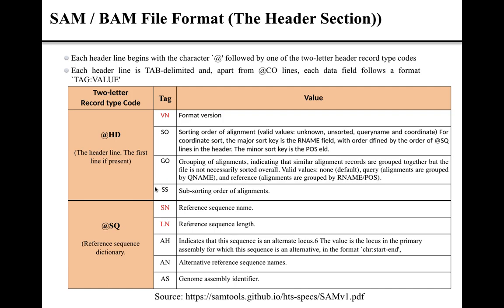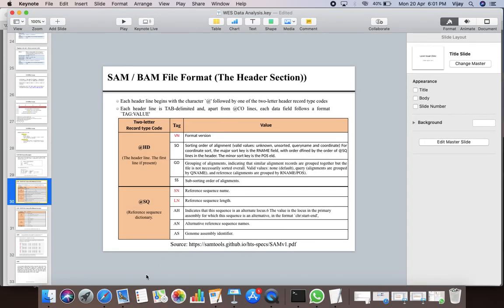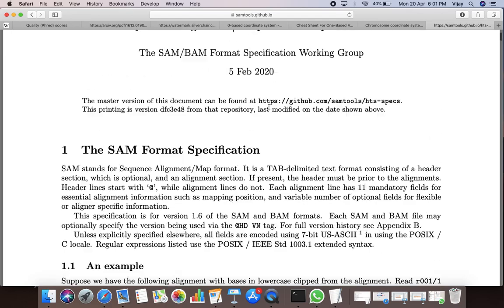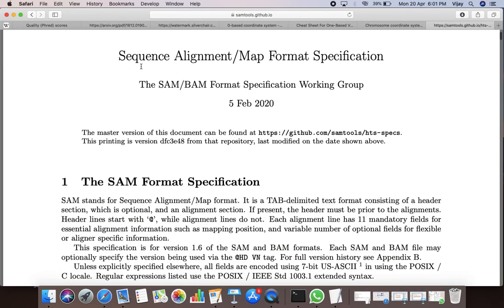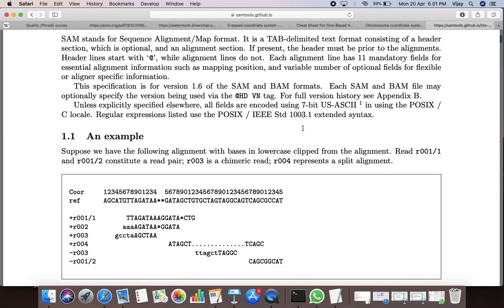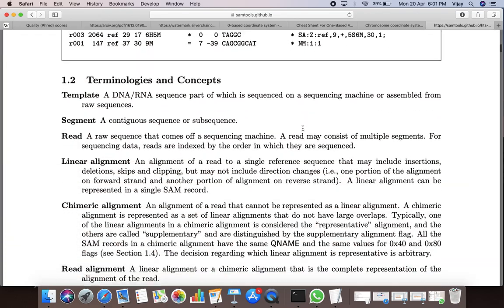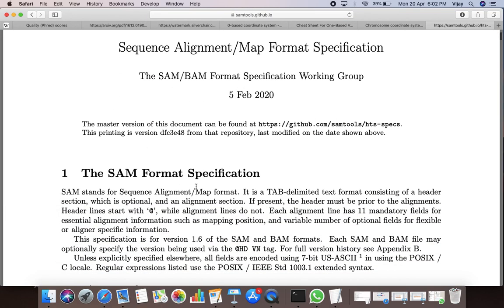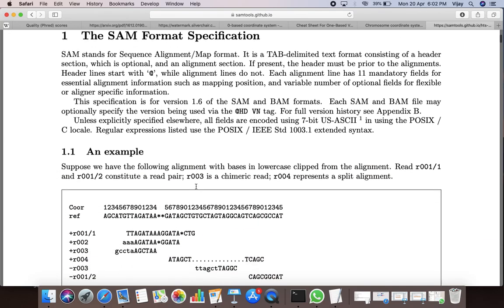The fourth tag in the HD line is SS, which represents the sub-sorting order of the alignment. A comprehensive detail about the SAM file format and the description of the different fields can be obtained from the SAM file manual, which is available to download from the SAMtools GitHub page. This PDF describes the SAM file format, and this presentation is based on the information presented in that PDF.